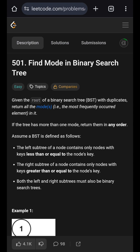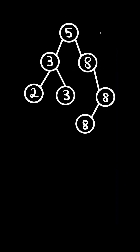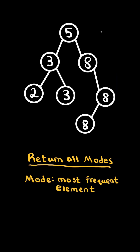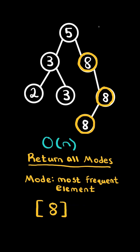Find mode in binary search tree. Given the root of a binary search tree, return a list of all the modes of the tree. The mode is defined as the most frequent element. In this case, 8 is the most frequent element as it appears three times, so we return a list of just 8.